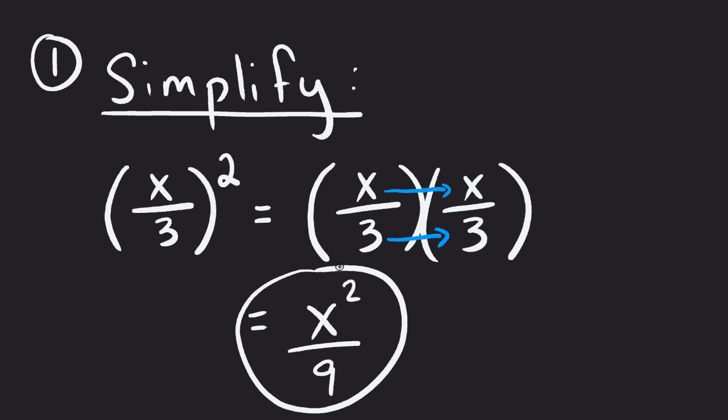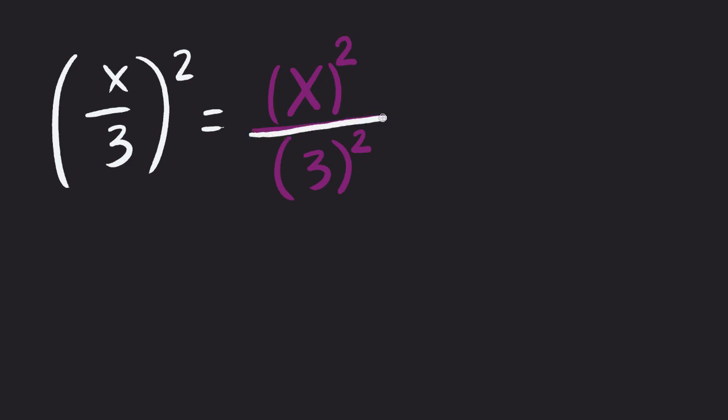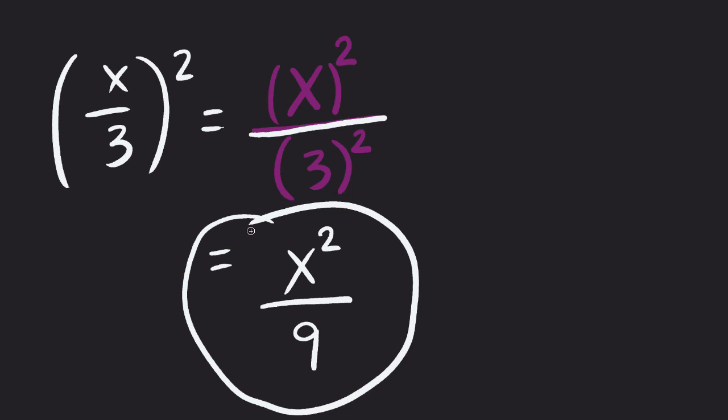Now, let's look at what the property says. The property says, if I had X over 3 squared, well, according to the property, I could take X squared over 3 squared. So X squared would be X squared, and 3 squared would be 9. The exact same solution we got the long way, only now we're simplifying our math by using a property. The power of a quotient property.